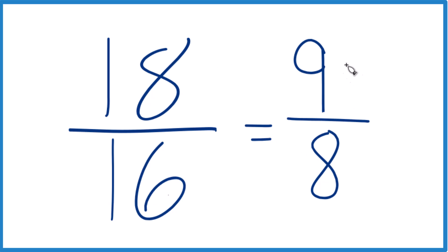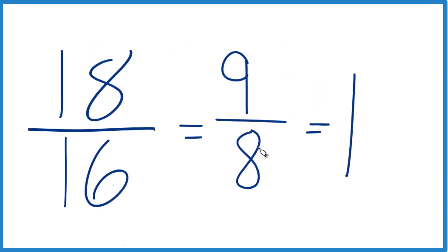But we can change it to a mixed number because the numerator is larger than the denominator. So this is an improper fraction. To get it to a mixed number, 8 goes into 9. Let's see, 1 times 8, that's 8, with 1 left over. Let me just bring the 8 across.